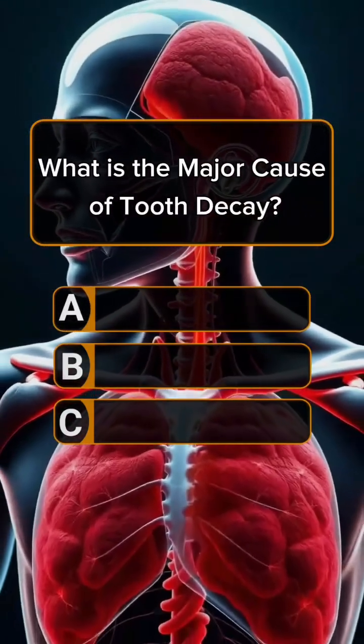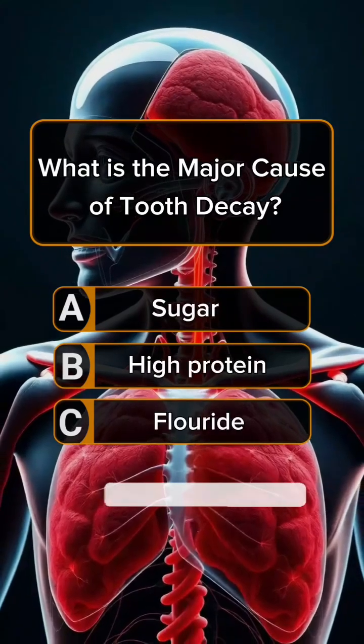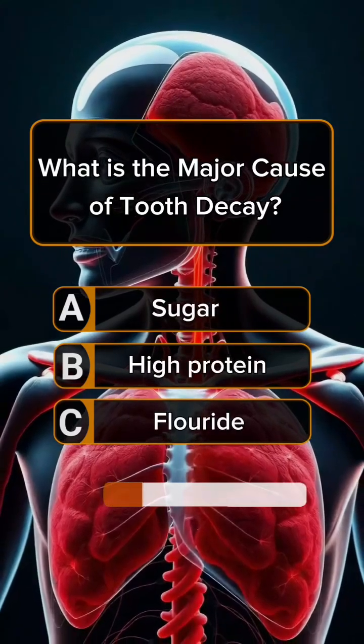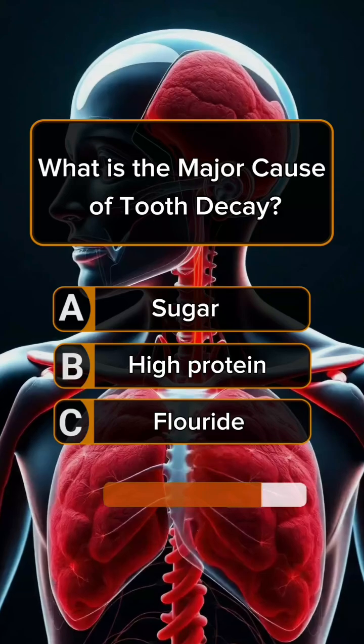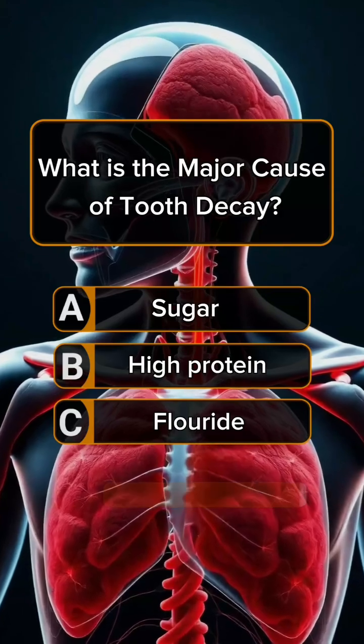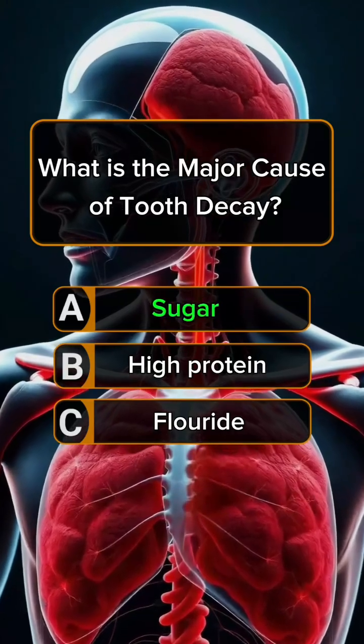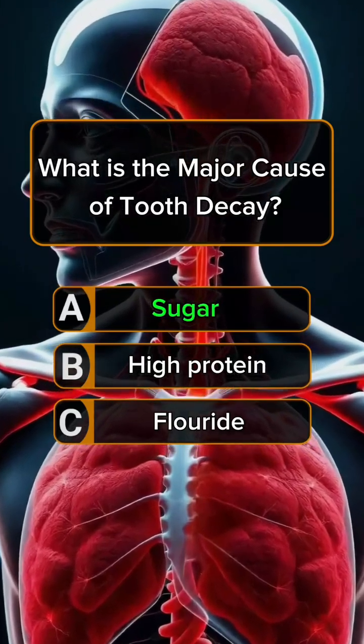Question 6. What is the major cause of tooth decay? Answer A. Sugar.